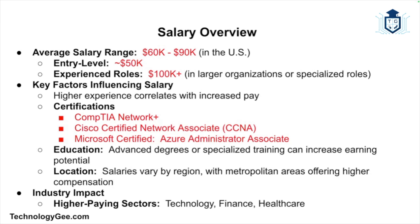Let's talk about the most important part — how much money do network admins typically make? The average salary of a network administrator typically ranges between $60,000 and $90,000 a year in the U.S., depending on factors such as experience, certifications, education, and location. Entry-level positions often start out at around $50,000, while experienced admins in larger organizations or specialized roles can earn upwards of $100,000 per year.